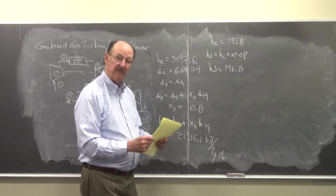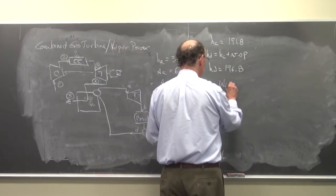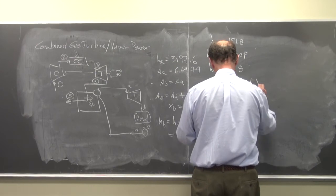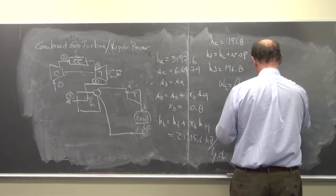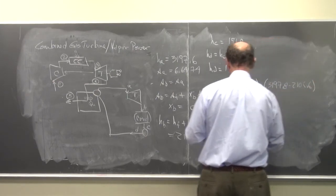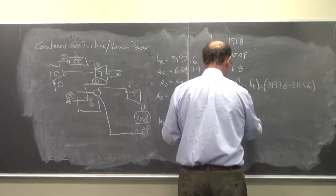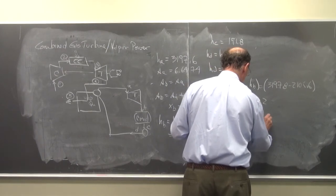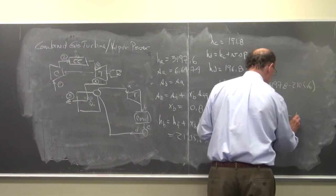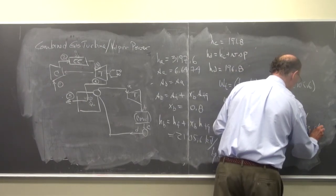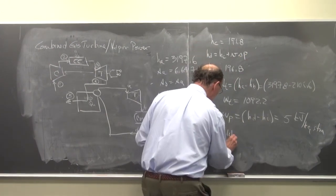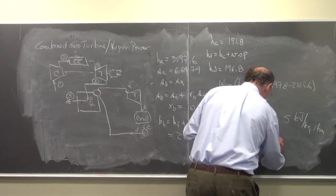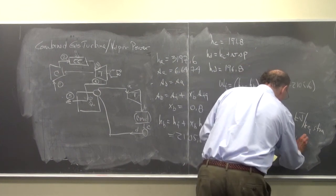So now let's find the turbine work. So for the steam, Wt is equal to HA minus HB, which equals 3197.28 minus 2105.6. So Wt is equal to 1092.2. Wp is equal to HD minus HC, which equals 5 kilojoules per kilogram. And so I can find the net work for the steam is equal to 1087.5 kilojoules per kilogram steam.